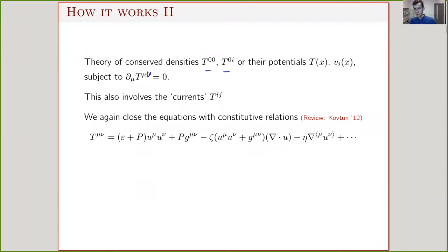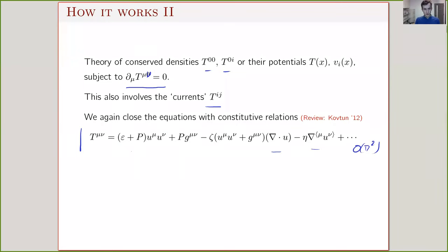In relativistic systems, we write constitutive relations for the stress tensor. The first two terms are the ideal form of the stress tensor involving energy and pressure; then there are first-order gradient terms with bulk viscosity and shear viscosity. Hydrodynamics classifies all possible terms you can write down, but it doesn't tell you what these coefficients are — those depend on the microscopics. A question was raised about where to truncate the gradient expansion: it's a question of precision. The key is checking if the fluctuation expansion interaction is relevant or irrelevant — if relevant, the whole expansion breaks down; if irrelevant, it's like in any EFT.